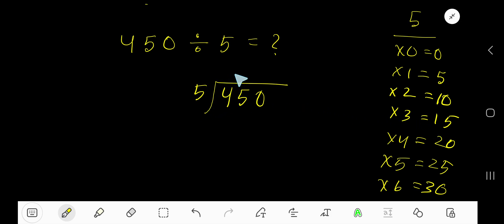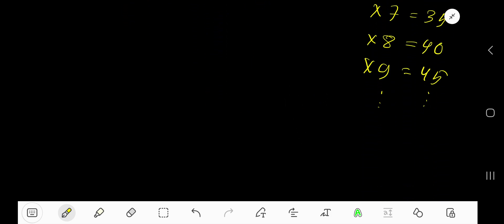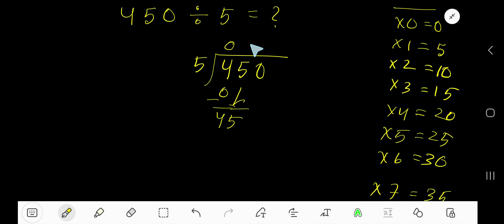Since 4 is less than 5, 0 times. 0 times 5 is 0. Subtract, 4 minus 0 is 4. Bring down this 5 to get 45. 5 goes into 45 how many times? 5 goes into 45 nine times. Write 9. 9 times 5 is 45. Subtract to get 0.